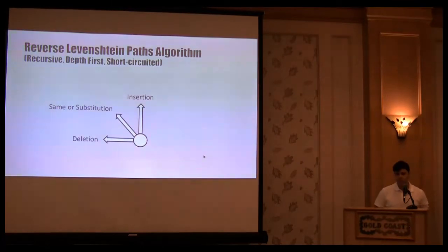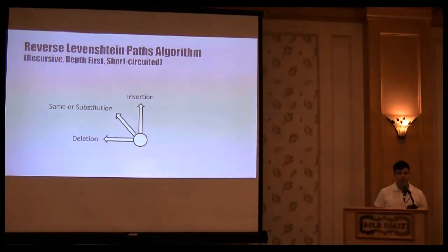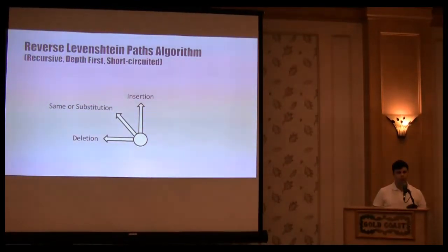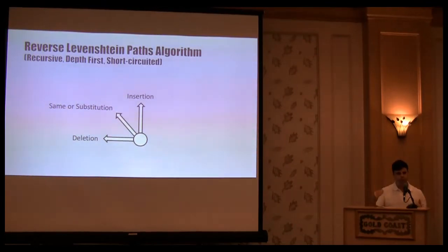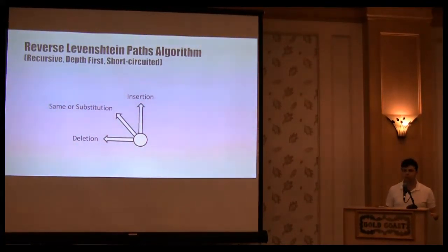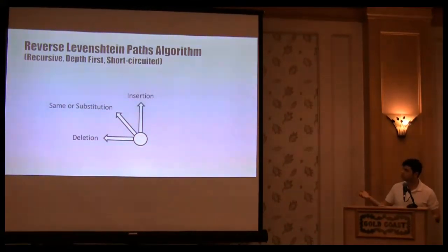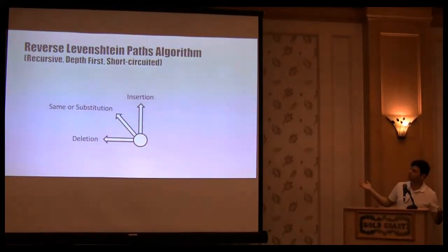When I was playing with this algorithm, I thought, well, hey, if I can walk it all the way to the bottom, I can generate this matrix. If I walk back in reverse and trace all the optimal paths to get from one word into another, I can actually come up with, what's called Levenshtein rules. So, as an LVB algorithm, which is recursive, depth-first, short-circuited algorithm for your CompSci guys, and it's very simple.